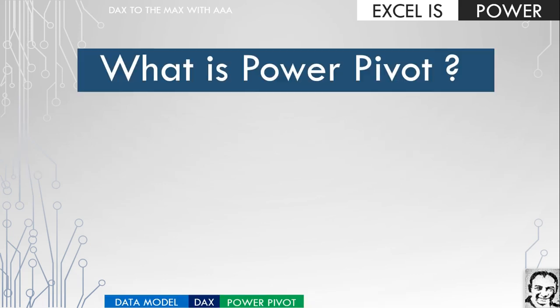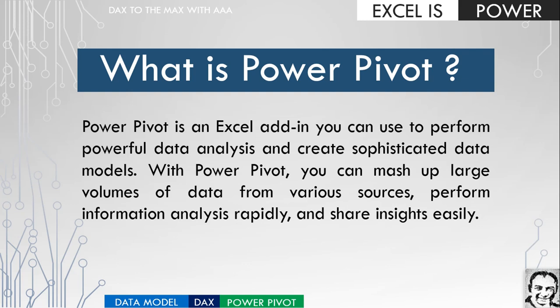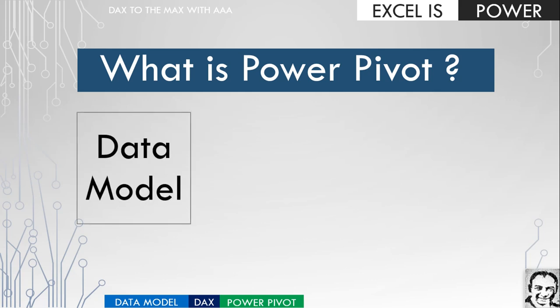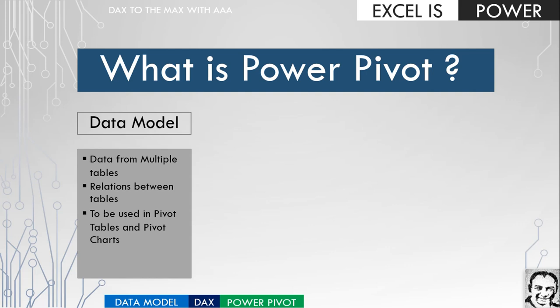Let's answer the first question: what is Power Pivot? If you search Google, you'll find the Microsoft definition — it is an Excel add-in you can use to perform powerful data analysis and create sophisticated data models. With Power Pivot you can mash up large numbers of data from various sources, perform information analysis rapidly, and share insights easily. Power Pivot contains three main parts. The first part is the data model, a database working behind the scenes in each workbook, giving you the ability to work with data from multiple tables and create relations between them. The output appears inside a pivot table or pivot chart.